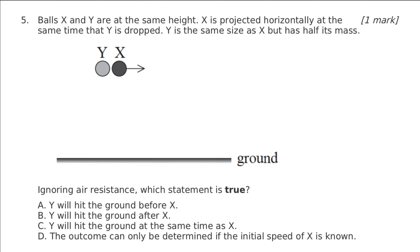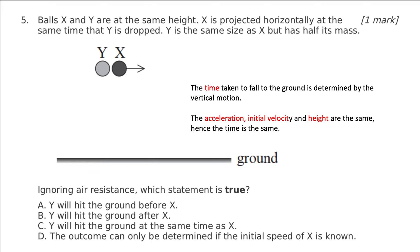We're now comparing two types of motion: Y, which is simply dropped, and X, which undergoes projectile motion. They're dropped at the same time, have different masses at the same size, and we're going to ignore air resistance. We know that the time taken to fall to the ground is determined by vertical motion only — we only consider acceleration in the Y direction. The acceleration, initial velocity, and initial height are the same, therefore the time is the same. Our acceleration, regardless of mass, is always equal to g — independent of mass and size — so Y and X hit the ground at the same time.